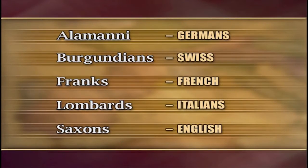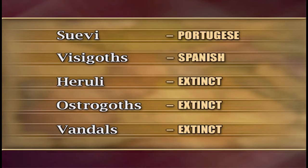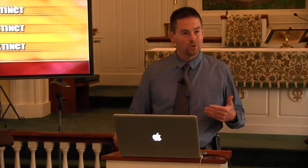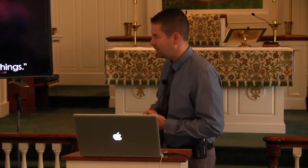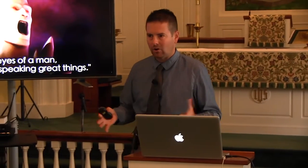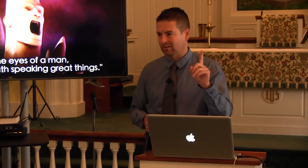And then of course those last three — the Hurili, the Ostrogoths, and the Vandals — are extinct. Why are they extinct? Because in Daniel 7 we're told that among the ten, another little horn comes up, and it plucks up three of those other horns in the process of coming up. Daniel 7:8 and verse 20 says it had eyes like the eyes of a man and had a mouth speaking great things. Who is this little horn? Who was it that uprooted those three kingdoms in the process of coming to power? I'm just going to give you the Cliff Notes version.